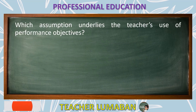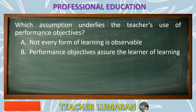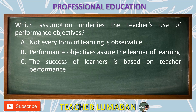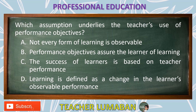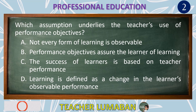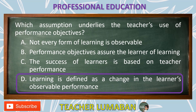Which assumption underlies the teacher's use of performance objectives? Letter A: Not every form of learning is observable. Letter B: Performance objectives assure the learner of learning. Letter C: The success of learners is based on teacher performance. Letter D: Learning is defined as a change in the learner's observable performance. The correct answer is Letter D. The assumption that underlies the teacher's use of performance objectives is that learning is defined as a change in the learner's observable performance.